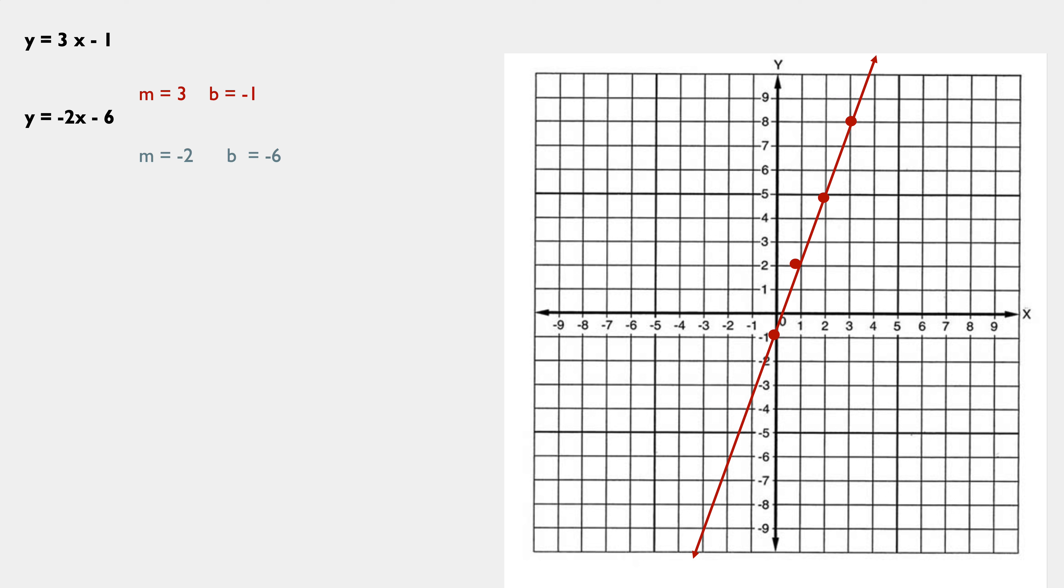Y equals negative 2x minus 6. The b for begin for y-intercept means we begin at negative 6 on the y-axis. The slope is negative 2. So, I can go down 2 over 1 to the right, but I chose to go up 2 and then 1 left. It's the same exact line. And it looks to me like they meet at the point negative 1, negative 4.